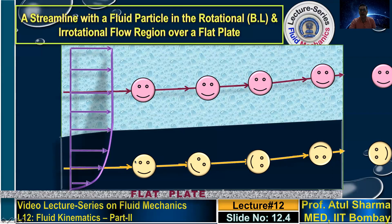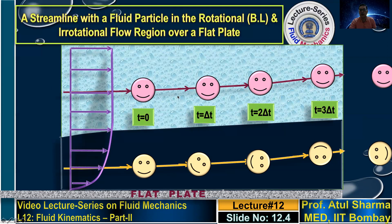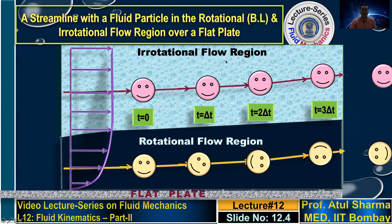Any fluid particle inside the boundary layer, which is the viscous region, when the flow region has certain rotation, this also gives an idea about the dominance of viscous forces. At different time instants t=0, Δt, 2Δt, 3Δt, a streamline outside the boundary layer shows no rotation due to negligible velocity gradients. Inside the boundary layer, the fluid particle rotates while translating due to unbalanced shear force. Therefore, inside the boundary layer is a rotational flow region, and outside is an irrotational flow region; the boundary layer separates the two.